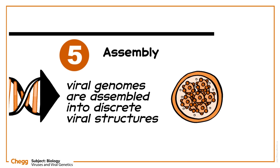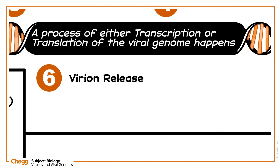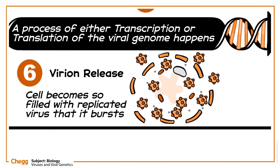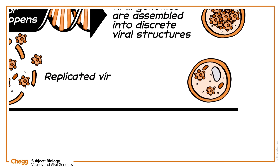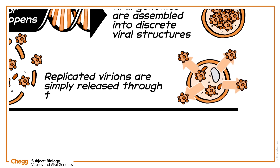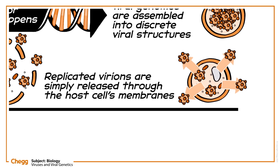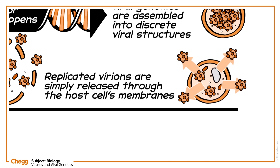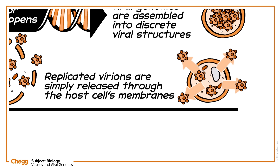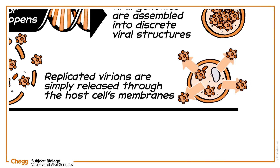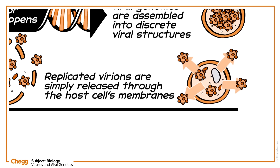This replication and assembly process continues until virion release. With many viruses, virion release happens when the host cell becomes so filled with replicated virus that it bursts. In other viruses, however, the replicated virions are simply released through the host cell's membranes — a process known as budding — which allows the infected host cells to continue replicating viral material for longer. Either form of virion release results in greatly multiplied virions, free to attach to other cells and begin the process again.